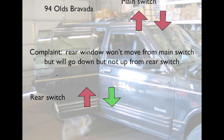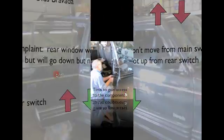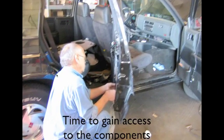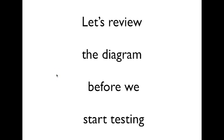Let's see if we can figure it out from the diagram. We've got to gain access, take the panel off so we can get to the components. The first thing to do is test it, but we've got to review our diagram first so that we know what we're going to be looking for.